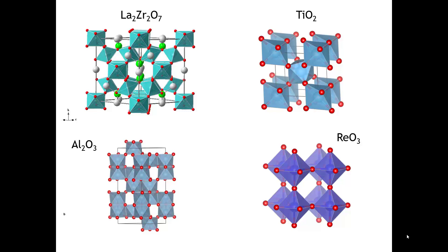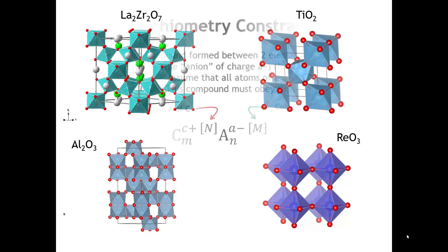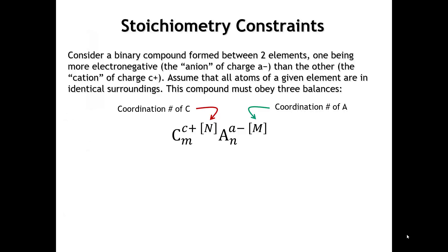In this lecture, we're going to look at the links between the empirical formula of a compound and its crystal structure. We'll start by writing the crystal chemical formula for a polar covalent compound. We're going to call the more electropositive atom the cation C, and the more electronegative atom the anion A. This works for compounds that are highly ionic, but also for compounds that have considerable covalency.